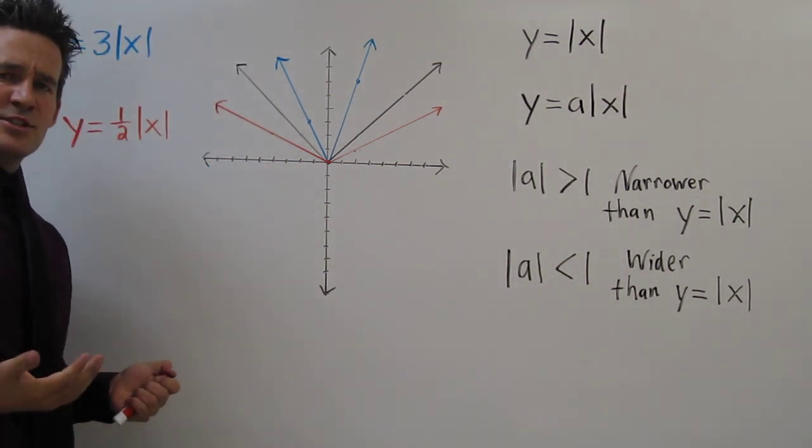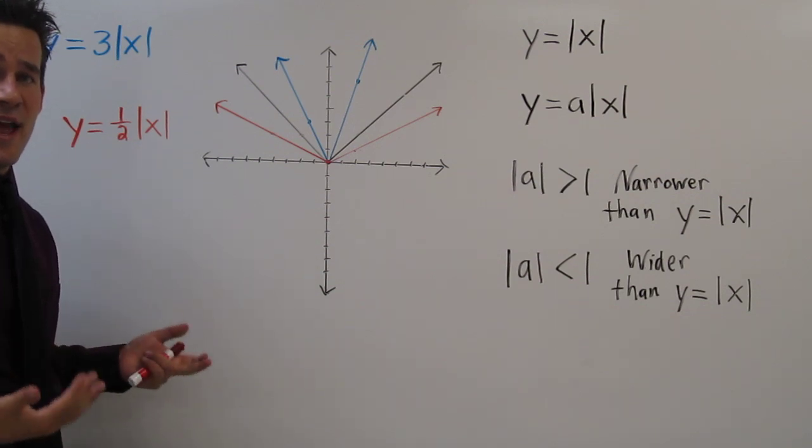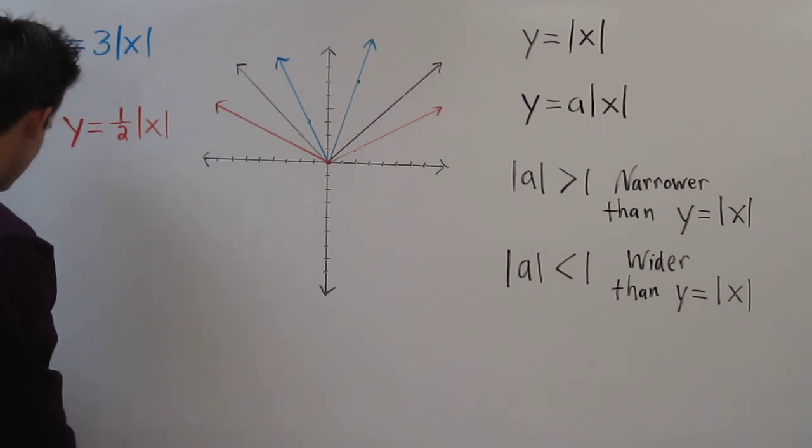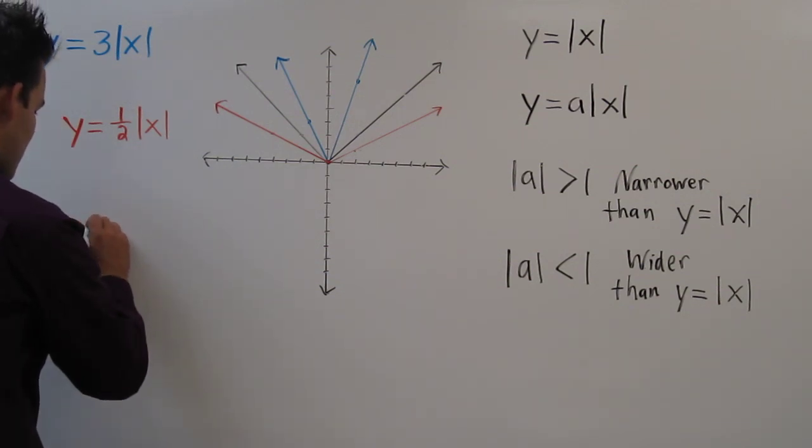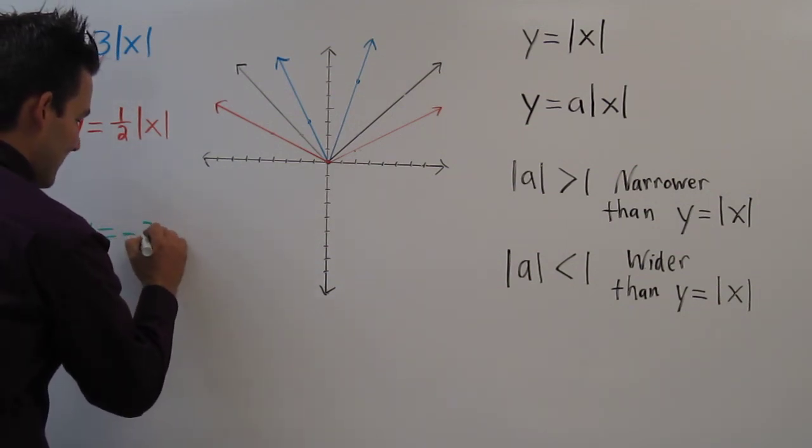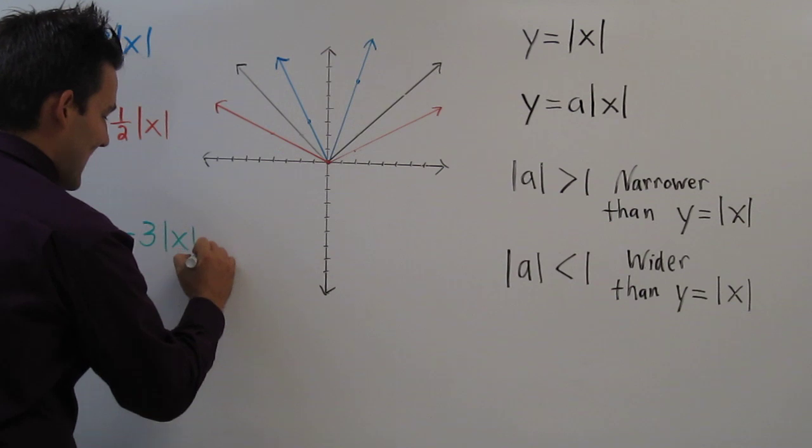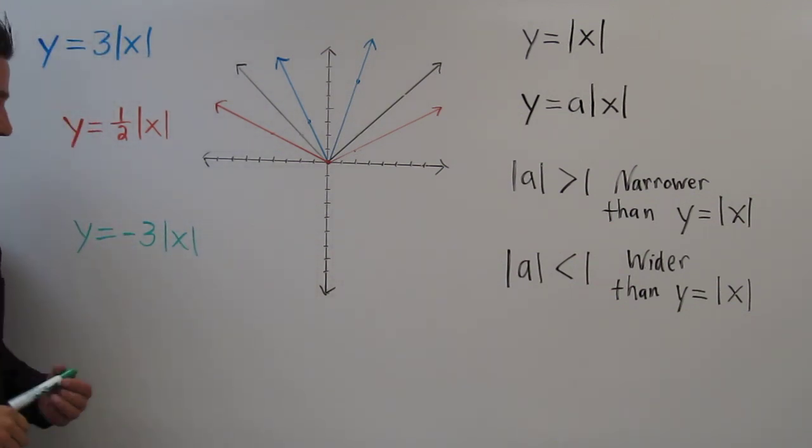Let's look at one last situation where we encounter a negative a. What if we have to graph y equals negative 3 times the absolute value of x? Now this is interesting. These two are very, very similar. The only thing that's different is this little negative, so we would expect these graphs to be very similar, except for one small thing.